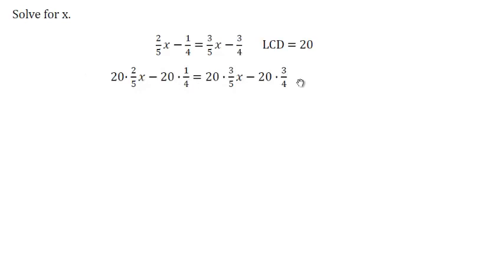The 5 goes into 20 4 times leaves me with 2x. The 4 goes into 20 5 times leaves me with 1. The 5 goes into 20 4 times leaves me with 3x. And the 4 goes into 20 5 times leaves me with times 3. Each time I was able to reduce by dividing, and this will always be the case if you get the right least common denominator. If you use the lowest one you'll have the smallest numbers possible.